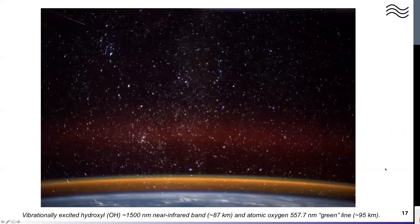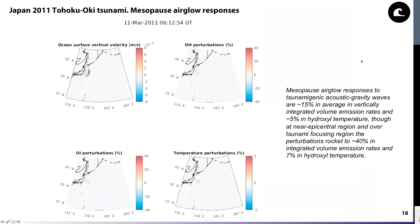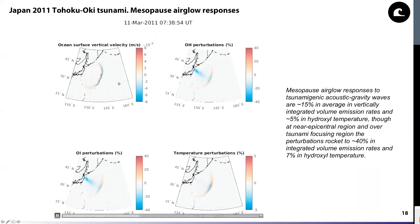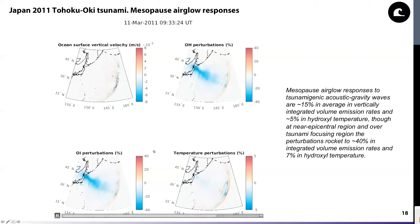We also investigated mesopause airglow perturbations for vibrationally excited hydroxyl and atomic oxygen — the so-called green line — for these two species, and the resulting perturbations of both these layers driven by the tsunami, returning to the earthquake in Japan in 2011. On this slide you see ocean surface vertical velocities, vertically integrated volume emission rates for hydroxyl and atomic oxygen (top right and bottom left respectively), and hydroxyl temperature perturbations (bottom right).